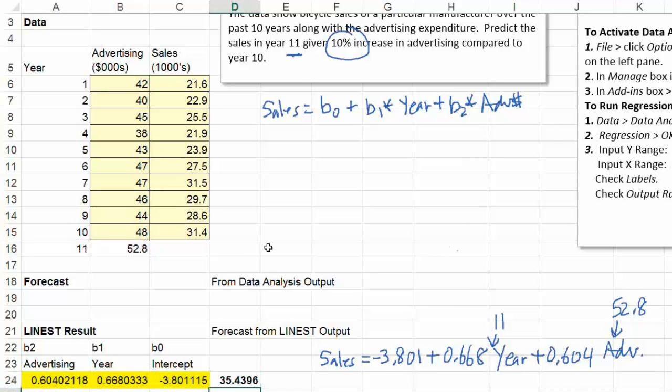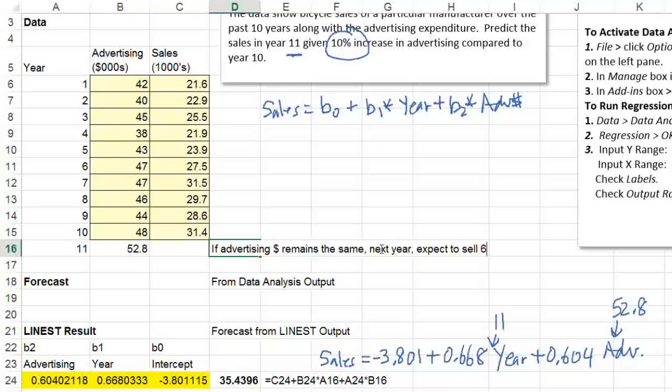This tells you that the annual increase is about 0.668, 668 bicycles. Everything remains the same, then next year expect to sell 668 more. So that's what this coefficient means. This is increase in the sales, increase in sales from one more year, when the year goes up by one, and then the other variable remains the same.